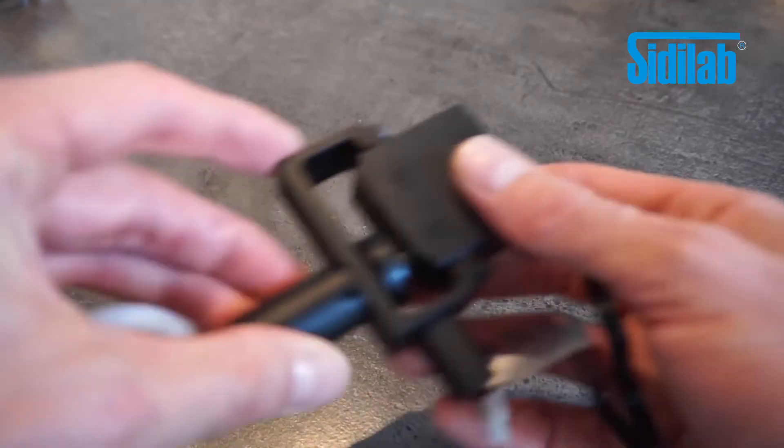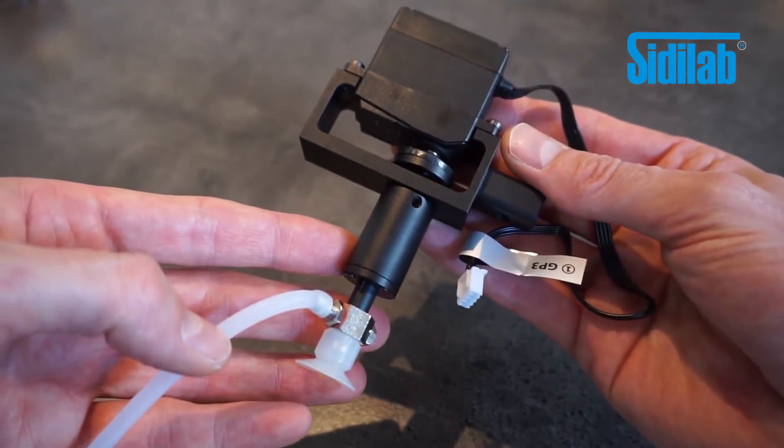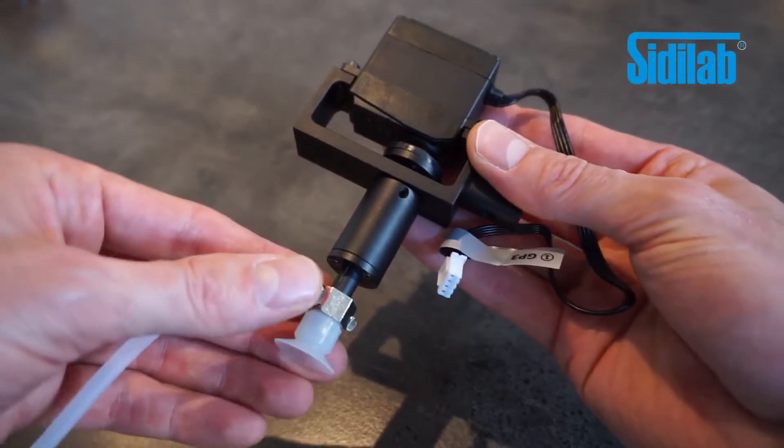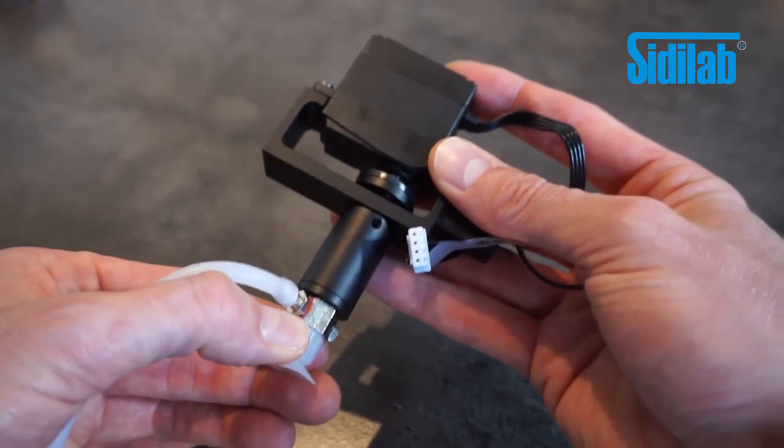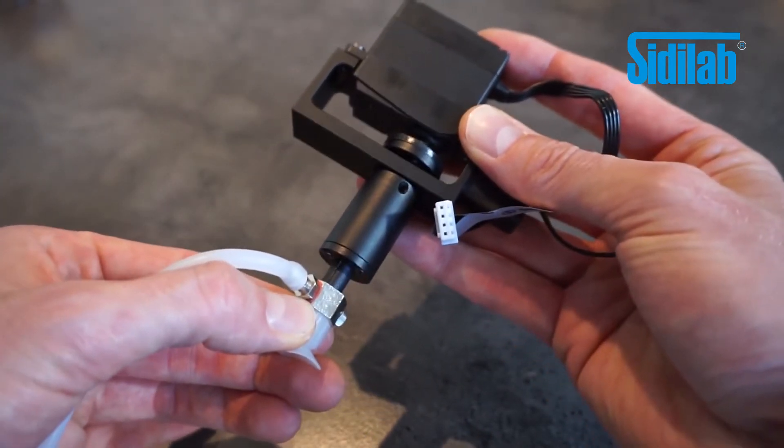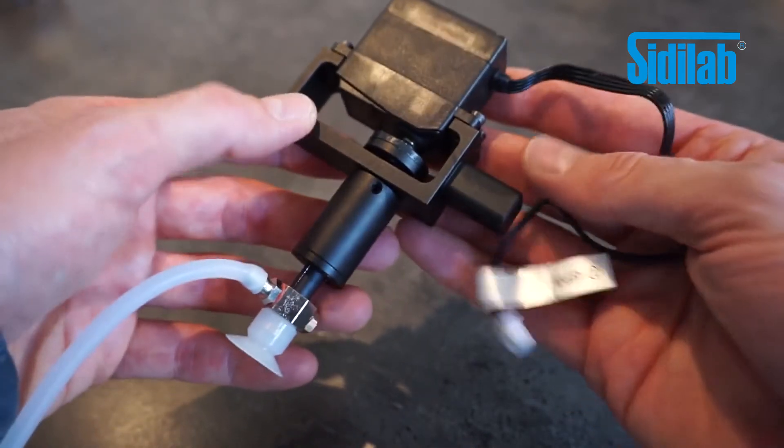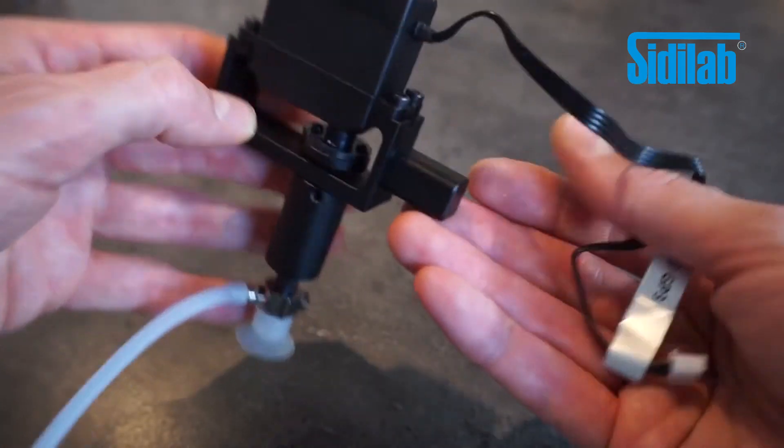The vacuum cup is one of the most versatile end effectors supplied with the Dubot. It can be used for pick and place operations for all sorts of parts as long as the part has a somewhat flat and smooth top surface. Here you can see the cup mounted to the fourth axis which is driven by a small servomotor.